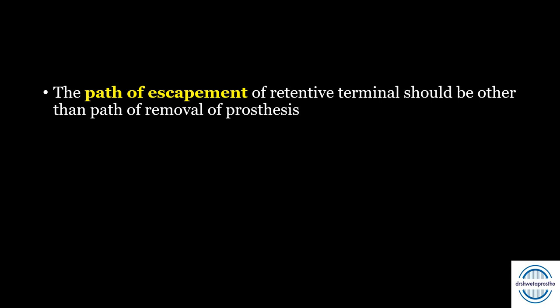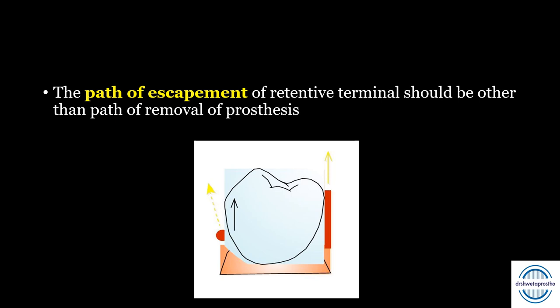Another very important principle of clasp assembly: the path of escapement or removal of the retentive terminal should be different from the path of removal of the prosthesis, so that it can resist the dislodging forces. This often comes as a true/false multiple choice question.